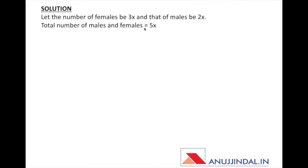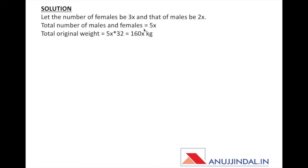Let's assume the number of females is 3x and the number of males is 2x, because the ratio of females to males is 3 to 2. So the total number of members in the family is 5x (3x plus 2x). We can now find the total original weight since we know the total number of persons is 5x and the original average weight is 32 kg.